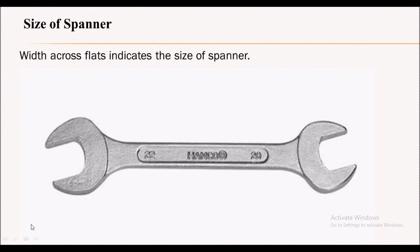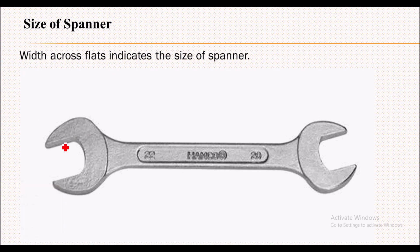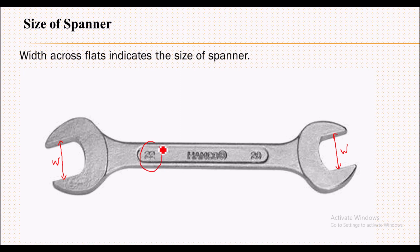First of all, what is meant by the size of a spanner, or how the spanner size is specified? Width across flat is nothing but the size of a spanner. Here in this image you can see the width across the flat. This spanner size is imprinted on the spanner itself — here you can see 22 and 20. So 22 indicates this width across flat and 20 indicates this width across flat.